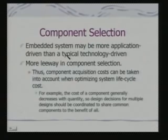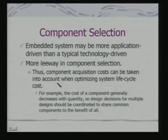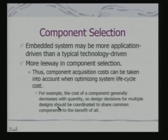This leads to component selection. An embedded system may be more application-driven than technology-driven, giving more leeway in component selection. Component acquisition cost can be taken into account when optimizing system life cycle cost. Cost of a component generally decreases with quantity, so design decisions for multiple products should be coordinated to share common components — you can look at multiple products using similar components, and the cost will go down benefiting the whole process.